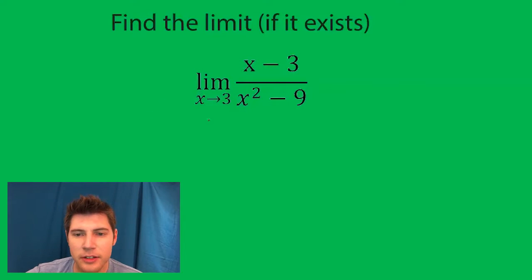As x approaches 3, we can ultimately just plug in a 3 for the x. When we do that, we get 3 minus 3 over 3 squared minus 9, and this ends up giving us 0 over 0.